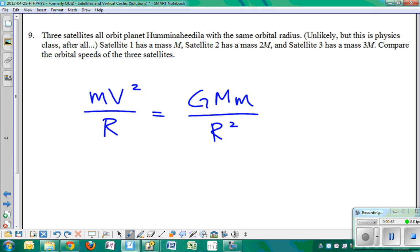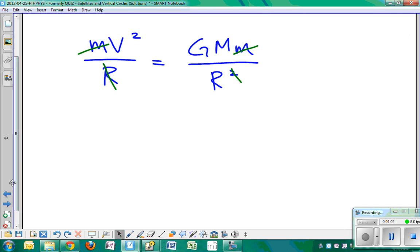So if we're trying to find the orbital speeds of the satellites, we cancel this out with this right here, mass cancels out, and we get, again, something we've seen before, we get that v is equal to the square root of GM over R,